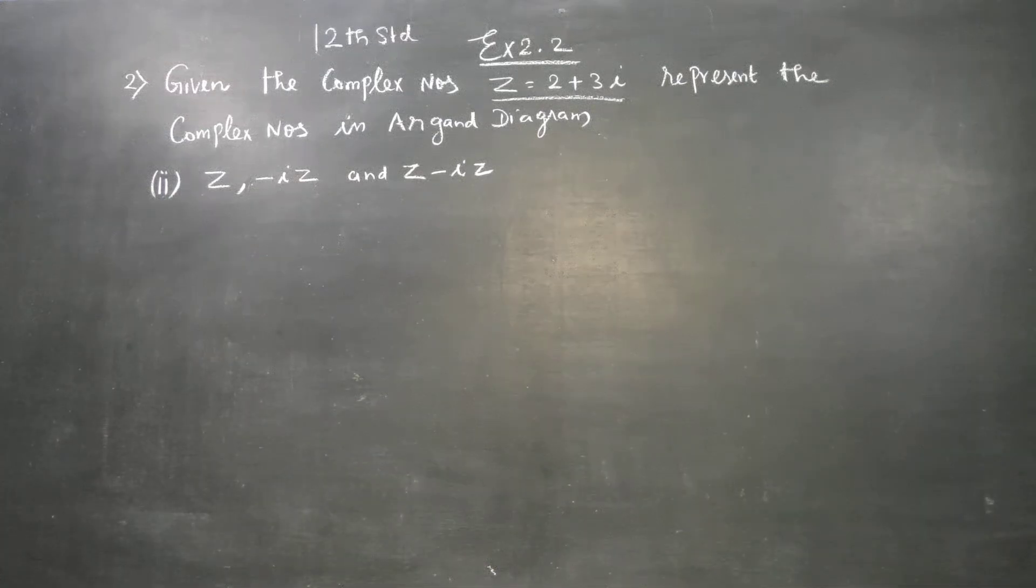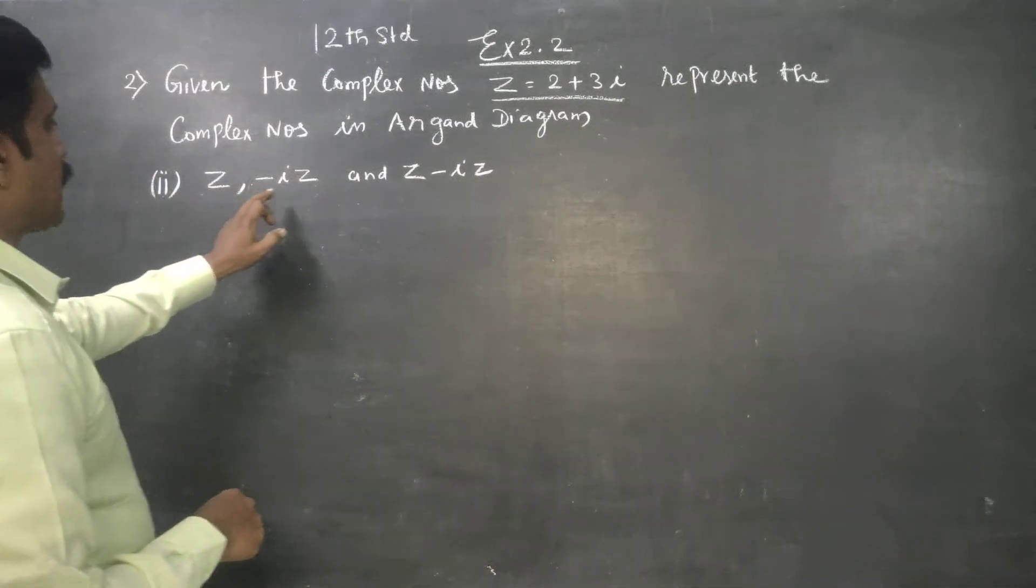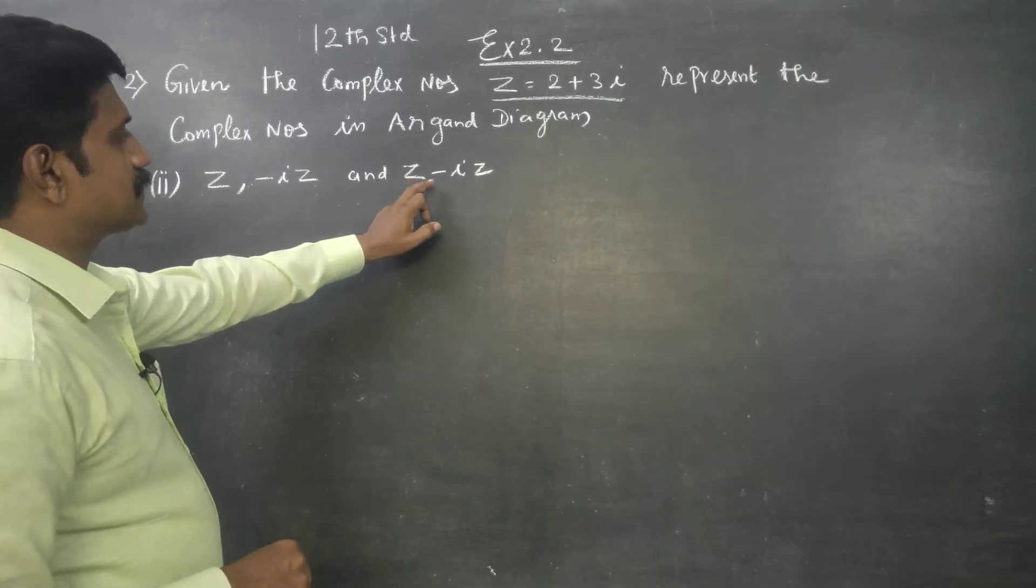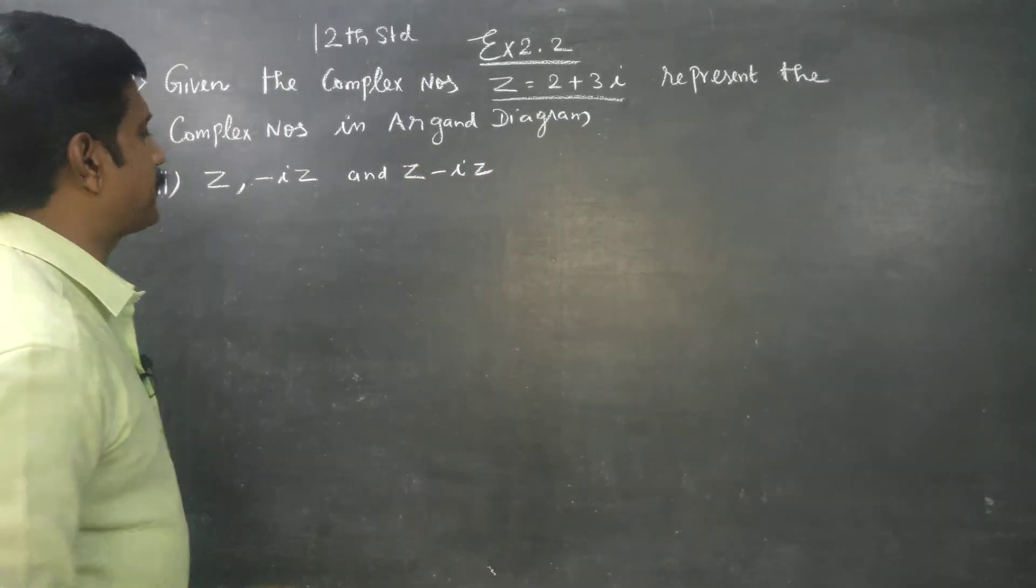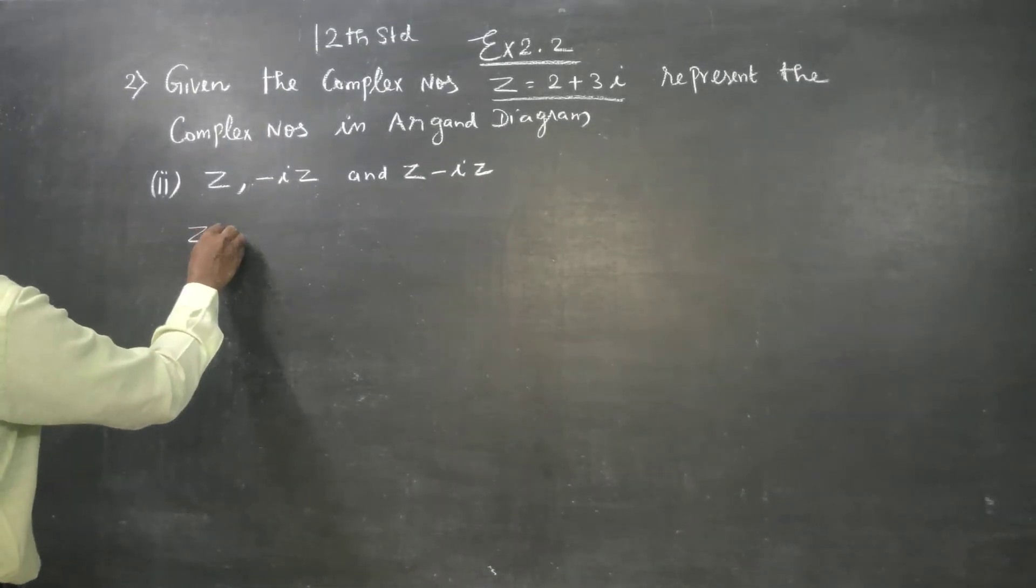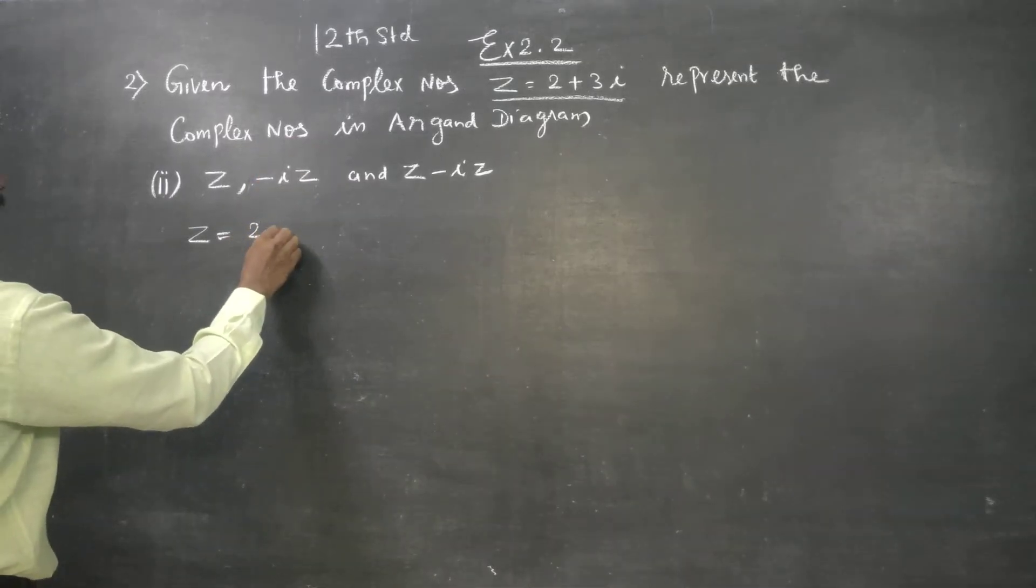Dear 12th standard students, represent z, -iz, and z-iz in the Argand diagram. Fine. What is my z? z is equal to 2 plus 3i.